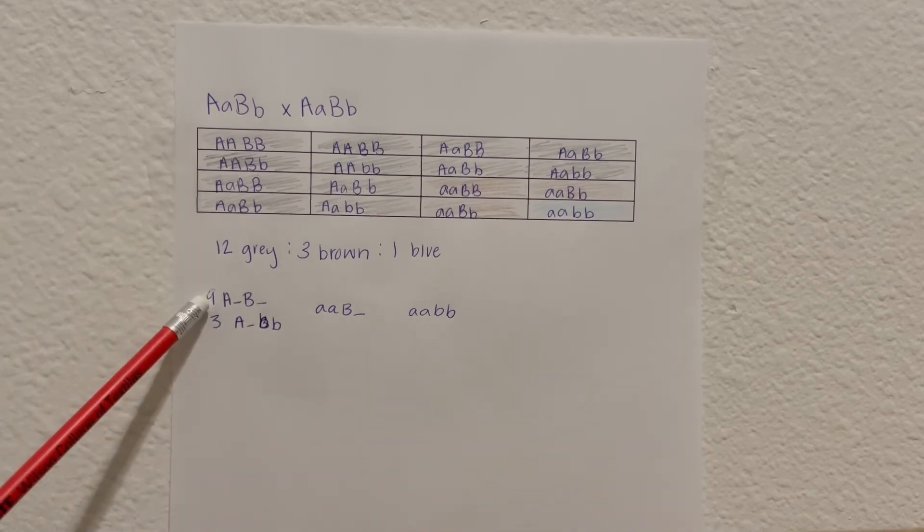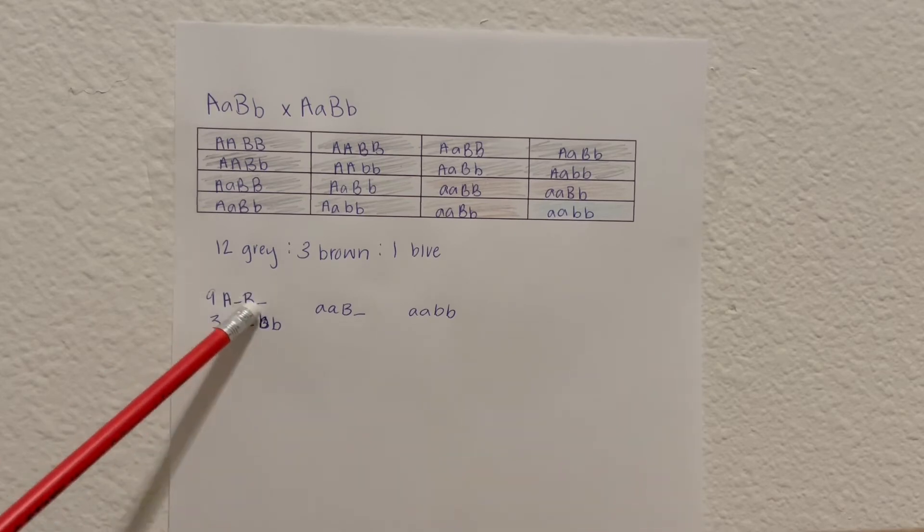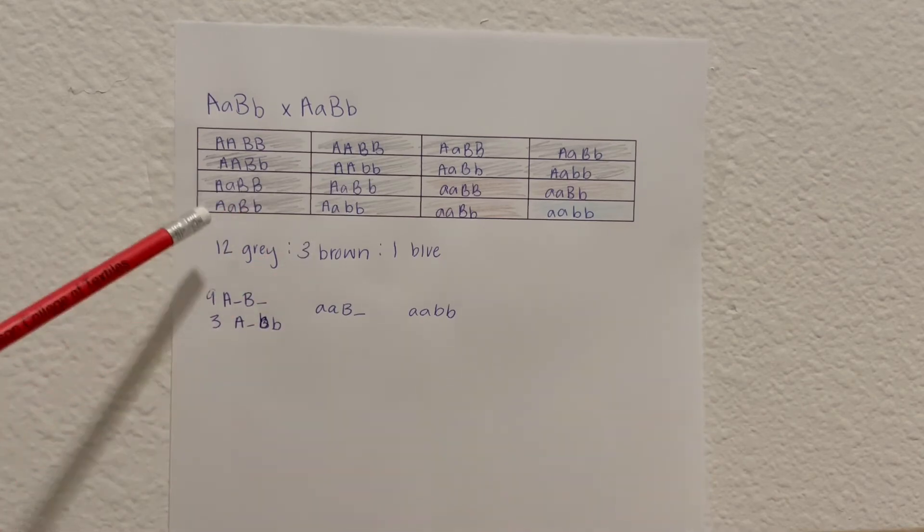So we have nine genotypes that are capital A with a capital B, and three that are a capital A with lowercase b's. So these two add up to create 12.